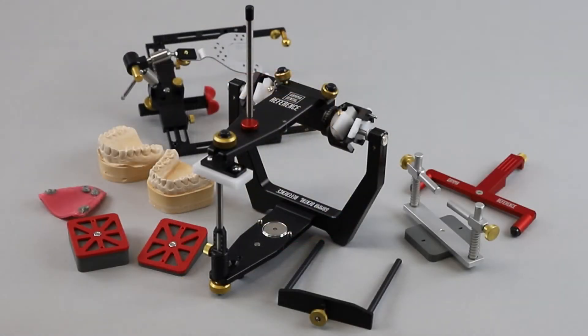For transferring the dental casts into the reference articulator you need the articulator itself, the upper and lower jaw model, the bite registration, the reference AB face bow with fixed bite fork from the patient, different distance blocks with pre-mounted mounting plates, the face bow support, bite fork support, and the mandibular mounting clamp.